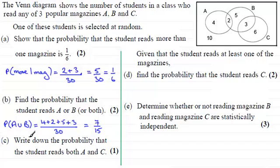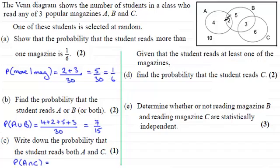For part C we've got to write down the probability that the student reads both A and C. This is the probability of A intersected with C. That is going to be the number of people common to both A and C. Well there's nobody — nobody reads magazine A and magazine C. So that would be zero out of thirty, or simply zero.